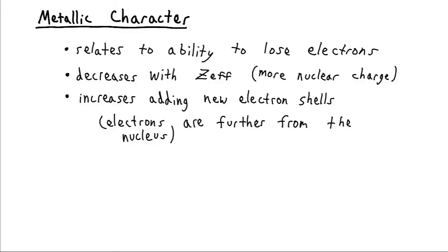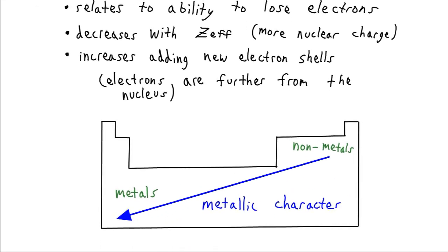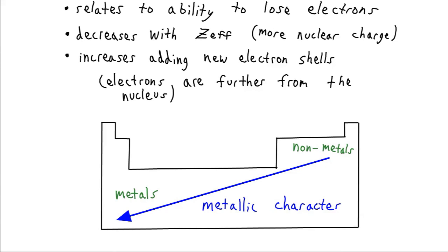Metallic character is essentially the ability of an element to give away its electrons. As effective nuclear charge increases, there is less ability to give away outer electrons. But as we add additional electron shells, it becomes easier to give them away, so metallic character increases going down the periodic table. The overall result is that going down and to the left gives more metal-like substances, while going toward the upper right gives non-metals.